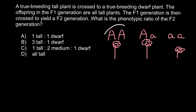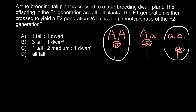These two genotypes we call true breeding, because if we self-pollinate these plants all the progeny would also be tall. And if we self-pollinate the homozygous recessive plant, all the progeny would also be small. But if we self-pollinate the heterozygous genotype, we would see that some of the plants would be tall and some would be short. So only those two homozygous genotypes we call true breeding.